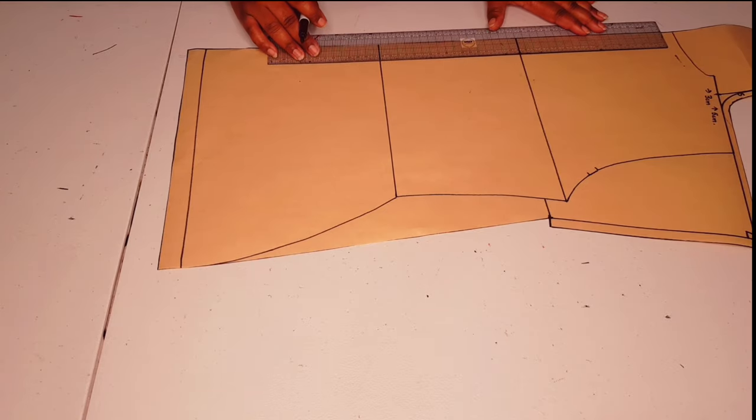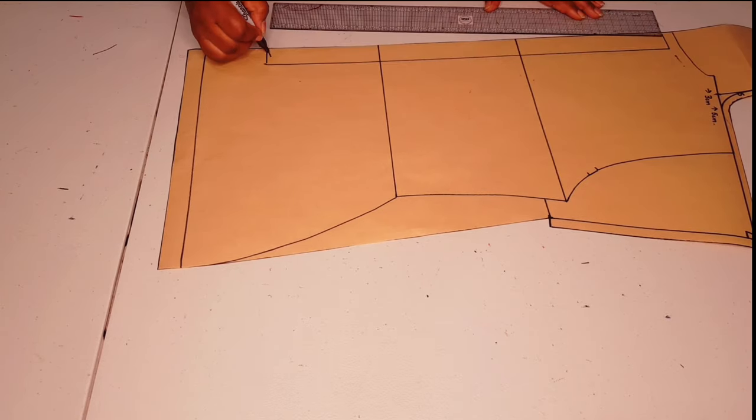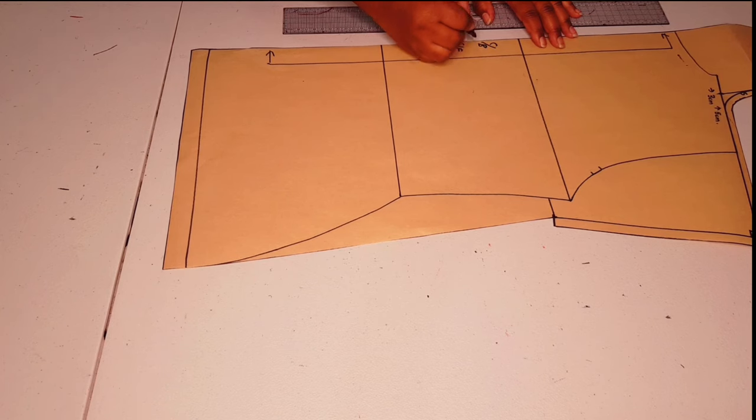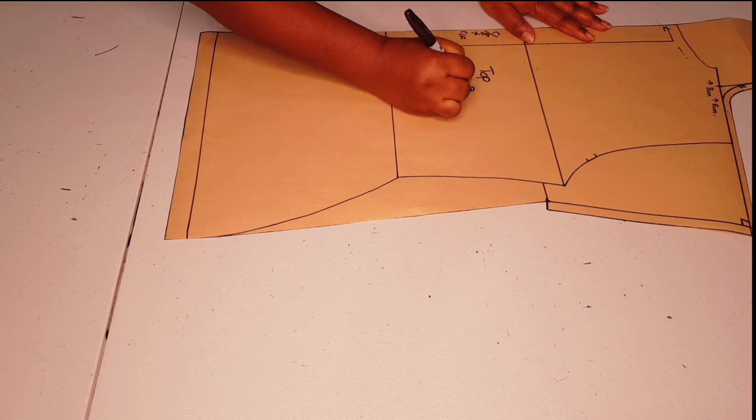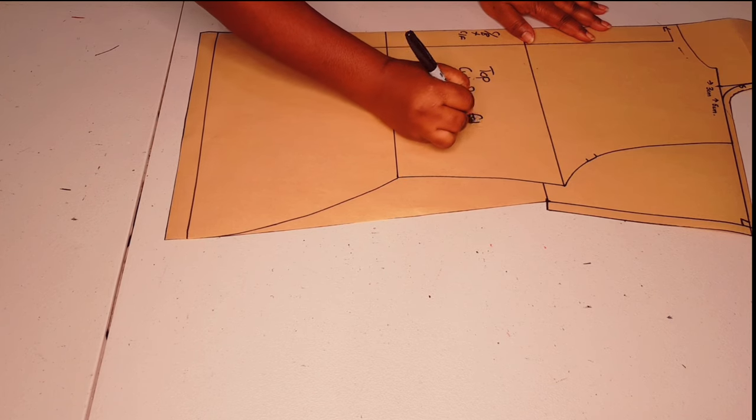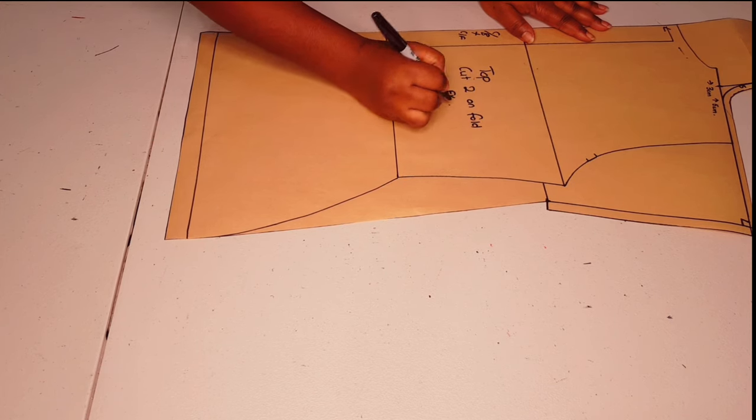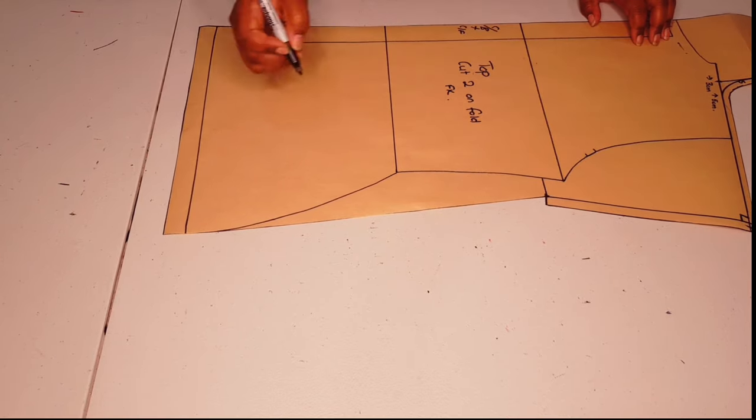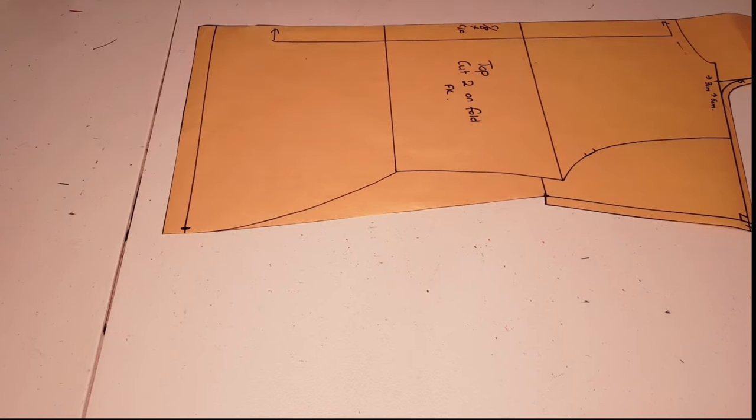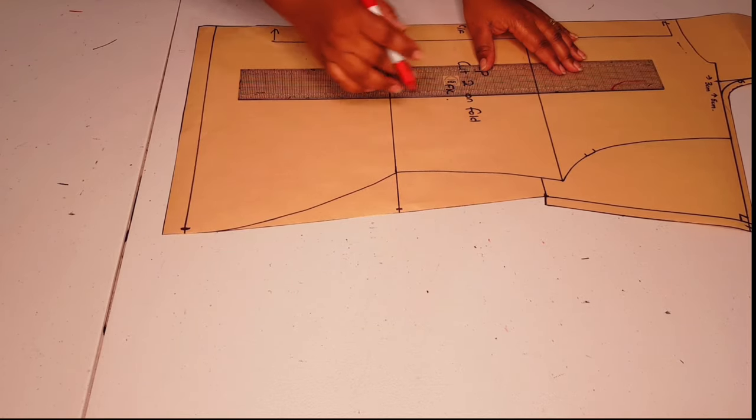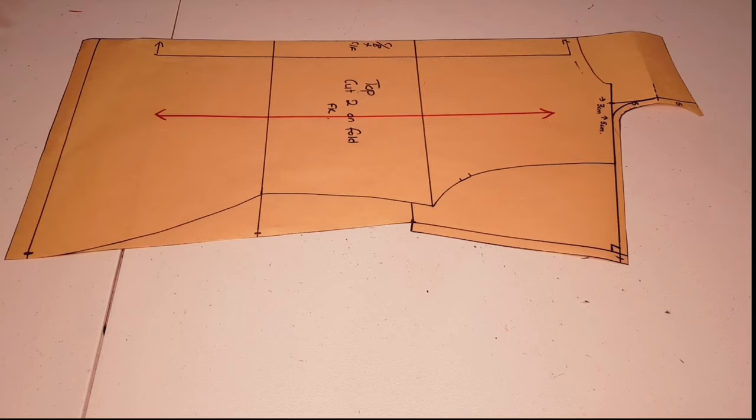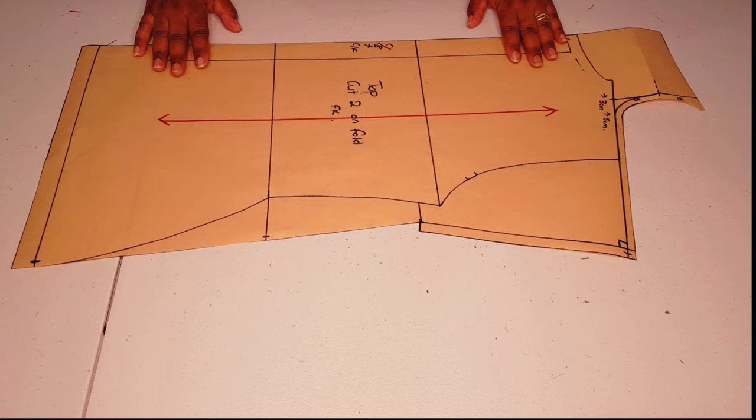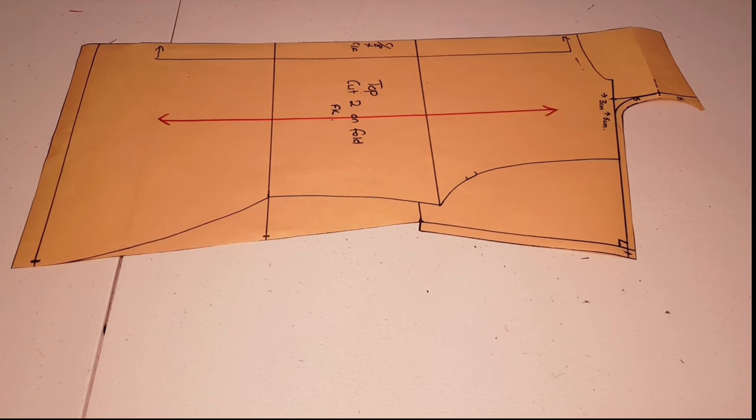We're going to be putting our center back and center front for this top on fold. Labeling the pattern: top, cut two on fold. I put my initial, so that's one for the back and one for the front. Adding my notches. Now adding a green line to the pattern parallel to the center back or center front. Our pattern's finished. Now we're moving on to sewing.